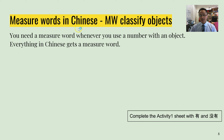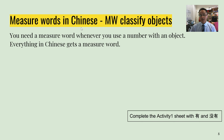Everything in the Chinese language has measure words, and a lot in English as well. For example, a can of coke — 'a can' is the measure word. A loaf of bread — 'the loaf' is the measure word. But everything in Chinese, in general, gets a measure word.